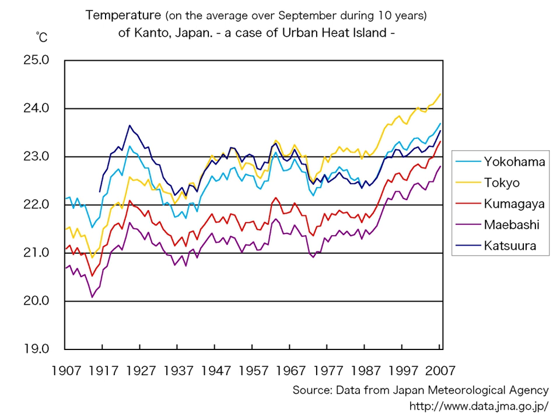There are several causes of an urban heat island. Dark surfaces absorb significantly more solar radiation, which causes urban concentrations of roads and buildings to heat more than suburban and rural areas during the day. Materials commonly used in urban areas for pavement and roofs, such as concrete and asphalt, have significantly different thermal bulk properties including heat capacity and thermal conductivity. This causes a change in the energy budget of the urban area, often leading to higher temperatures than surrounding rural areas.